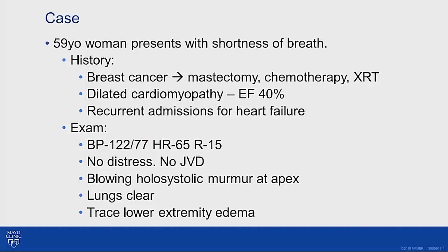Our case is a 59-year-old lady with a history of breast cancer. She had bilateral mastectomies for recurrent breast cancer — the first time with chemotherapy, the second time with radiation therapy. This had left her with a dilated cardiomyopathy, EF about 40%. She had started to develop recurrent admissions for heart failure, in part related to her cardiomyopathy as well as mitral regurgitation.